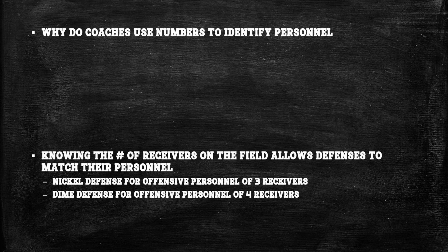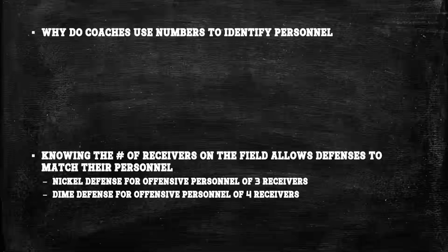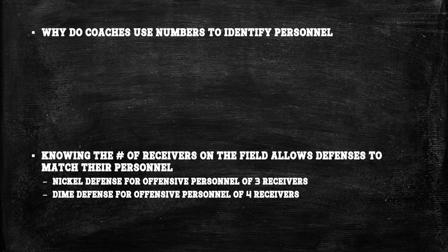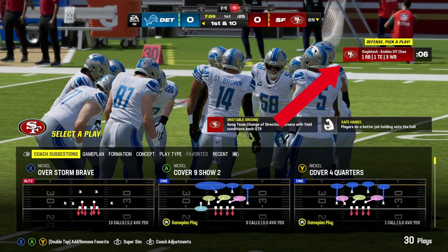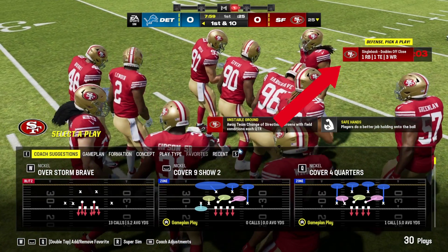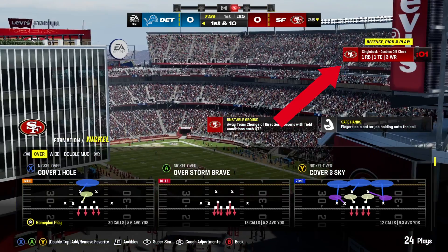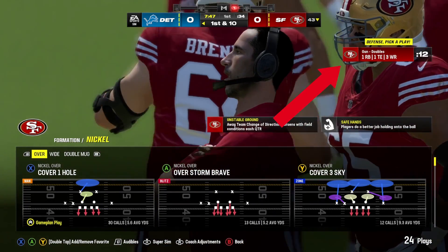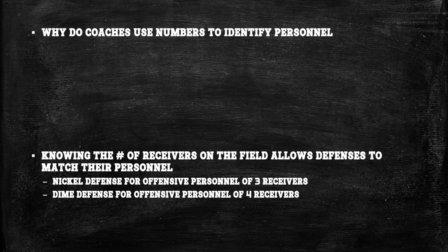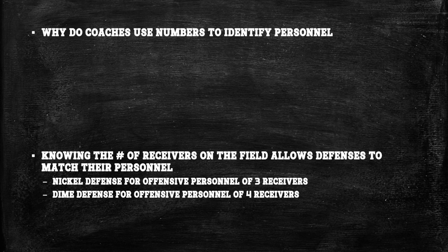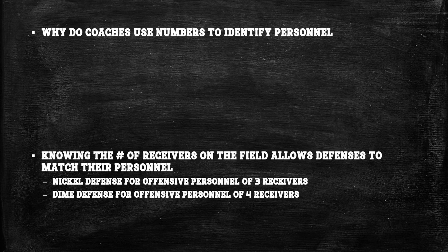This gives you an idea of how a defensive coordinator can put the right personnel on the field to match the opposing team's personnel. If you've played Madden or any college football game, you've noticed this as well — it will tell you when you're on defense how many receivers, running backs, and tight ends the opposing team is putting out there, and you can call your defense based on that. The coach suggestion generally works that way too, based on personnel and down and distance. But this is a way for you to manually call your own defenses in those games as well.